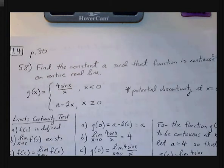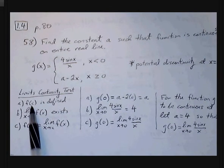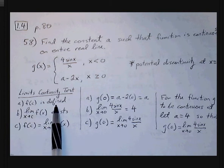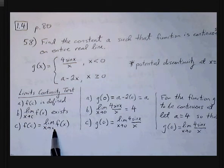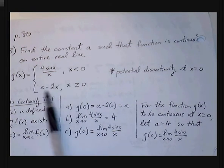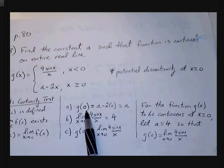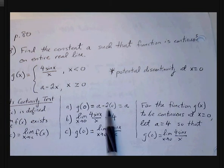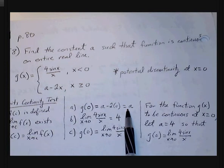Using the continuity test, we have three conditions: the function f(c) must be defined, the limit must exist, and the ordered pair must exist where the limit exists. For the first condition, x equals 0 is defined for a minus 2x. Plugging 0 in: g(0) equals a minus 2 times 0, so g(0) equals a — which we'll need to solve for later.